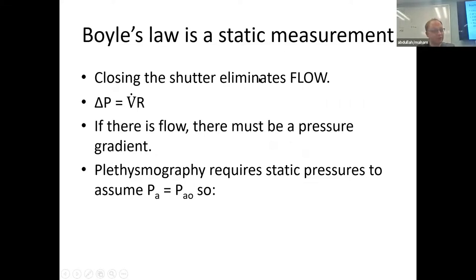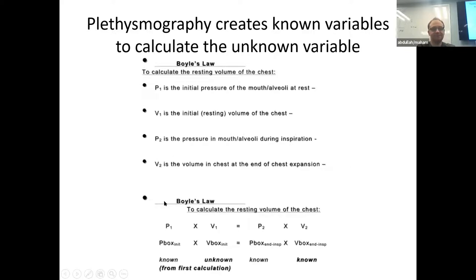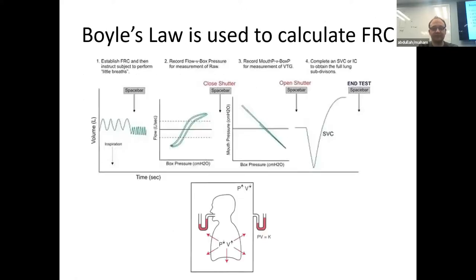Closing the shutter eliminates flow. If there's flow there must be a pressure gradient, and if there's a pressure gradient you can't measure the actual pressure needed for this calculation. A static pressure is required to assume that airway pressure equals alveolar pressure. Then you get initial box pressure, initial box volume, box pressure at end inspiration, and volume at end inspiration — looking at how pressure changes between resting tidal volume and when only FRC remains in the lung — allowing you to calculate residual volume.